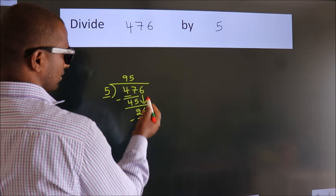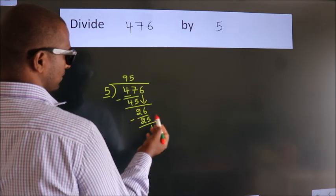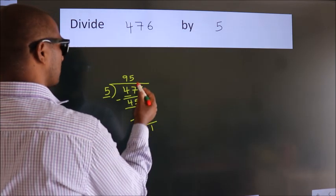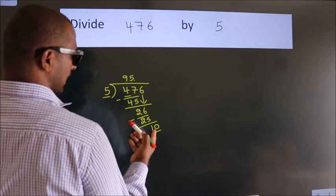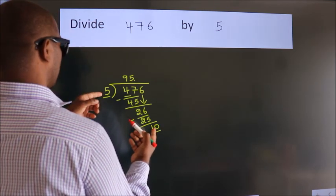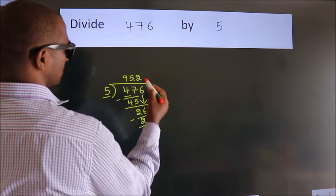After this, no more numbers to bring down. So what we do is we put a dot, take 0. So 10. When do we get 10? In the 5 table: 5 twos, 10.